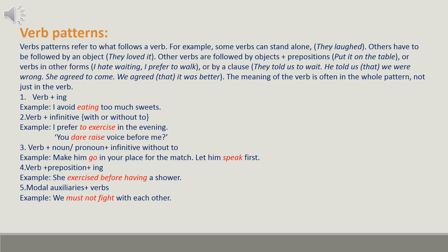Hopefully you understood both kinds of verbs. Let's proceed to the next topic: verb patterns. Verb patterns refer to what follows a verb. Some verbs can stand alone — 'they loved' — others must be followed by an object — 'they loved it.' Other verbs are followed by objects plus a preposition — 'put it on the table' — or verbs in other forms — 'I hate waiting,' 'I prefer to walk.' Some are followed by a clause — 'he told us that we were wrong,' 'she agreed to come.' The meaning of the verb is often in the whole pattern, not just the verb itself.